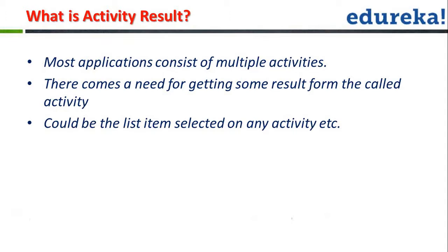This sounds like passing data, but here we are passing data in a different manner. We are trying to access the data from the start of an activity, and then automatically the activity will close. Like, Activity A is there; on Activity A we are trying to access the data of B. When you click the button, Activity B will start, you perform something — you click on an option — then Activity B will close, you come back to Activity A, and the result will populate. This result came after accessing some part of Activity B. This is the concept of Start Activity for Result.